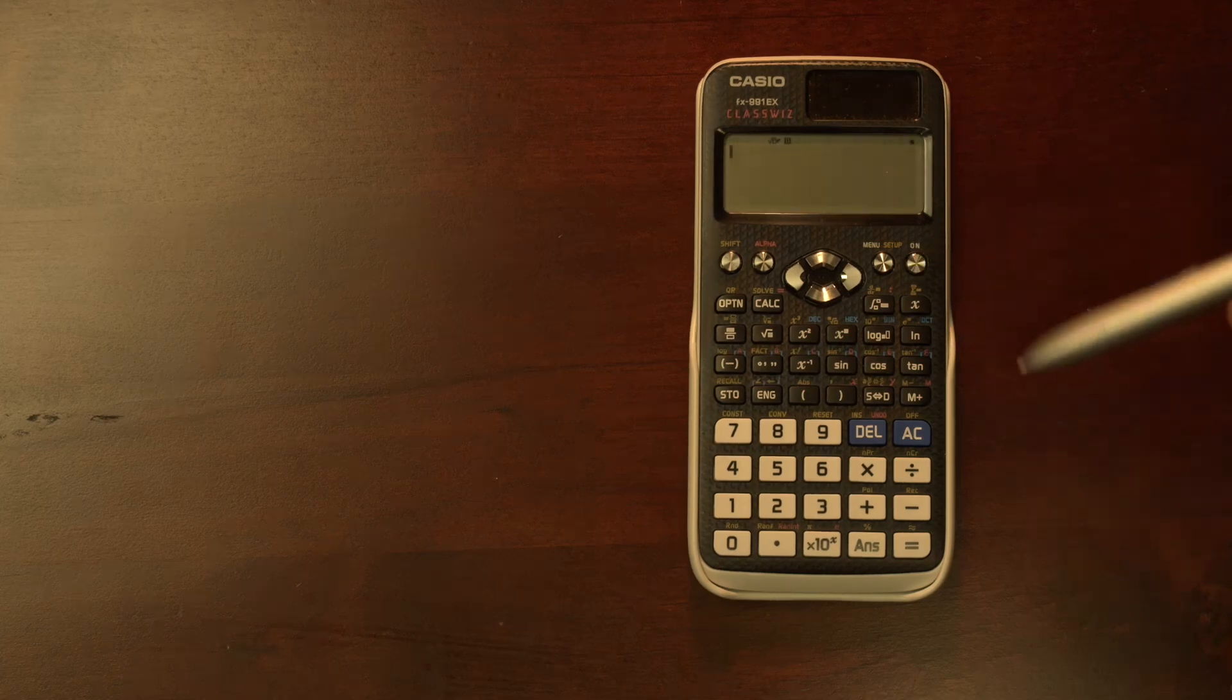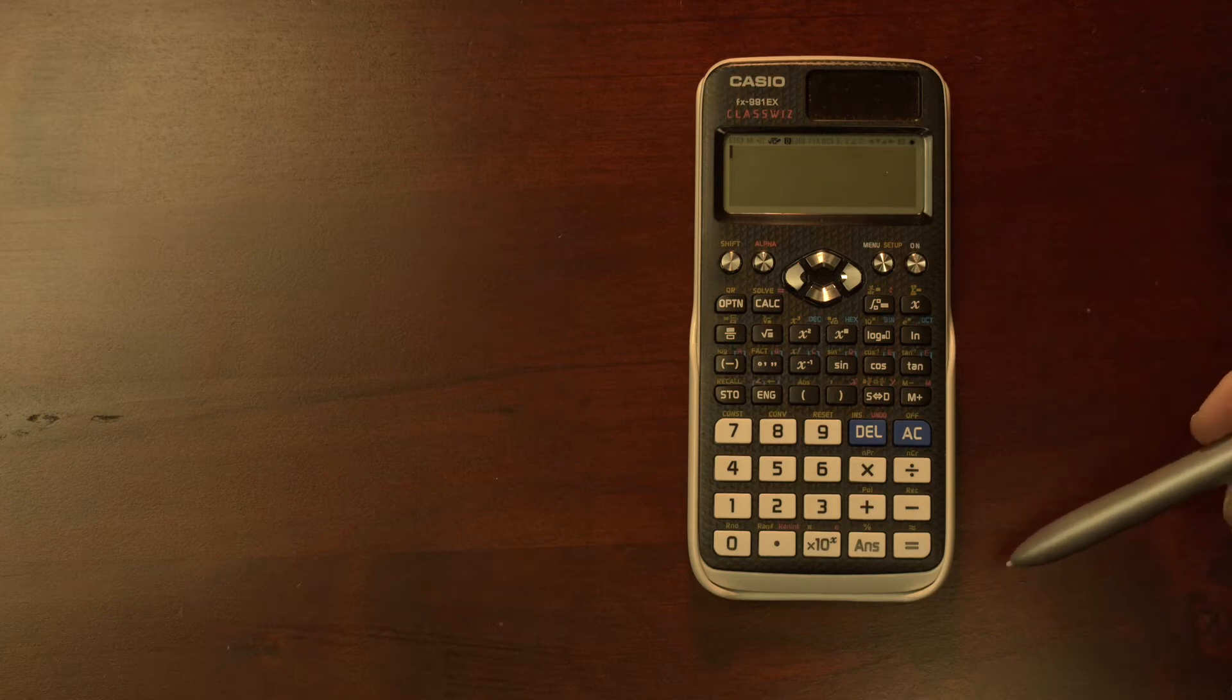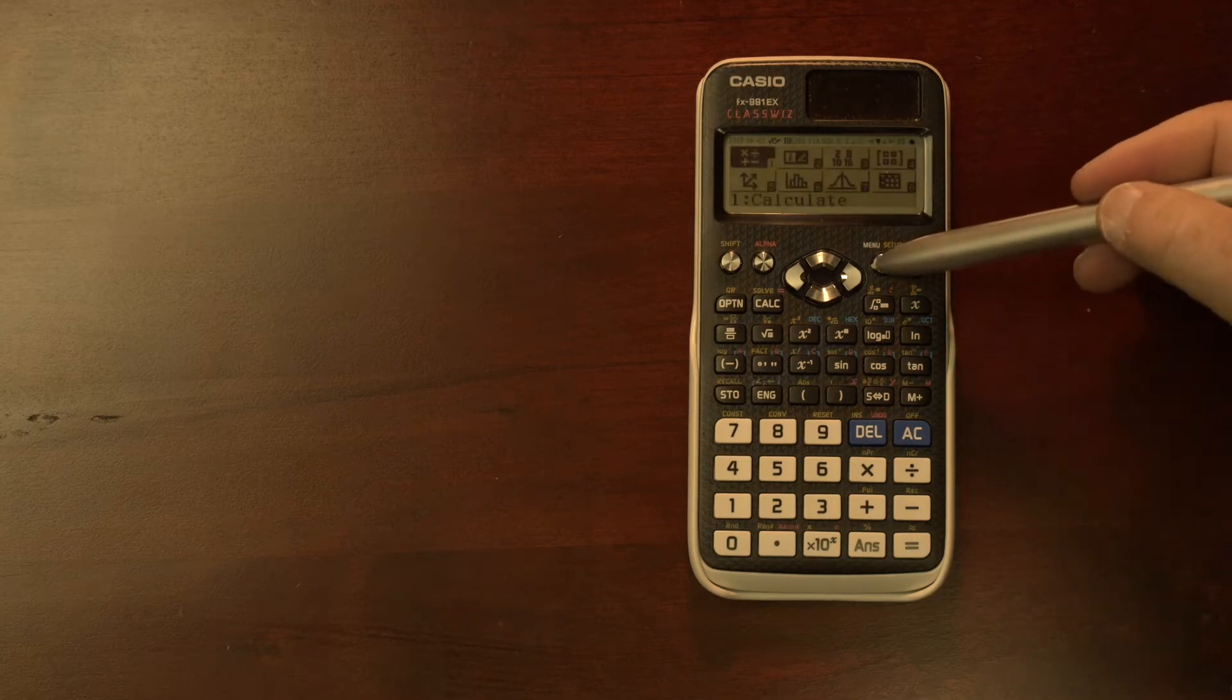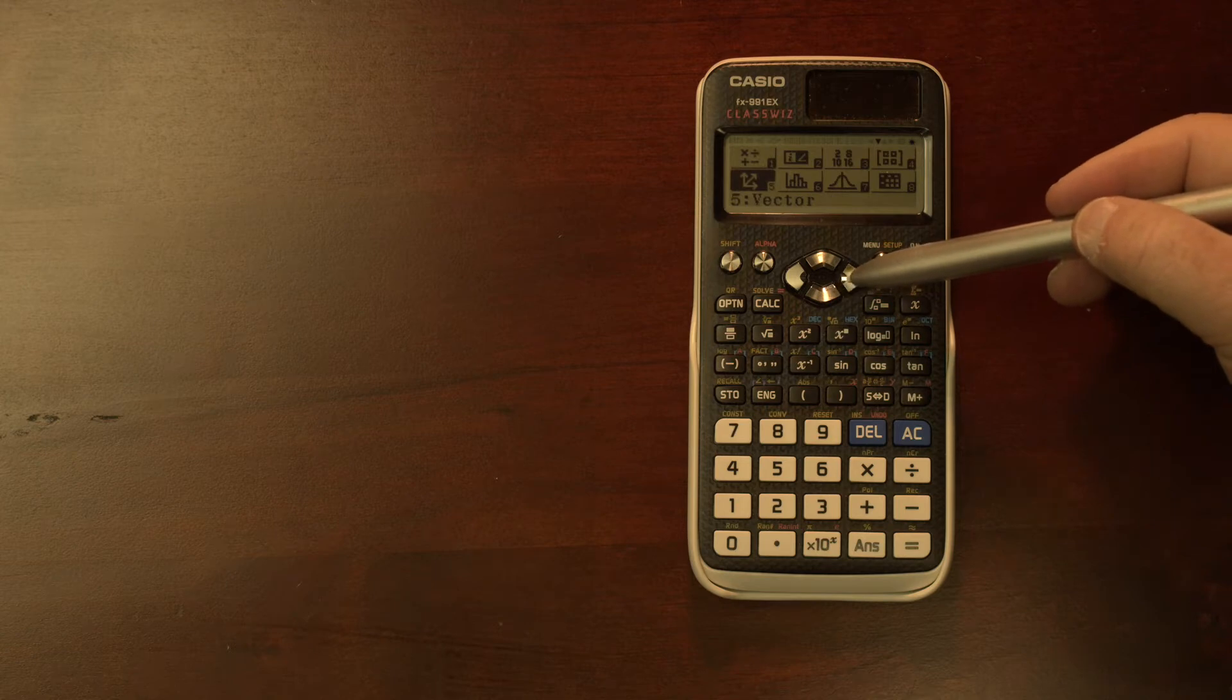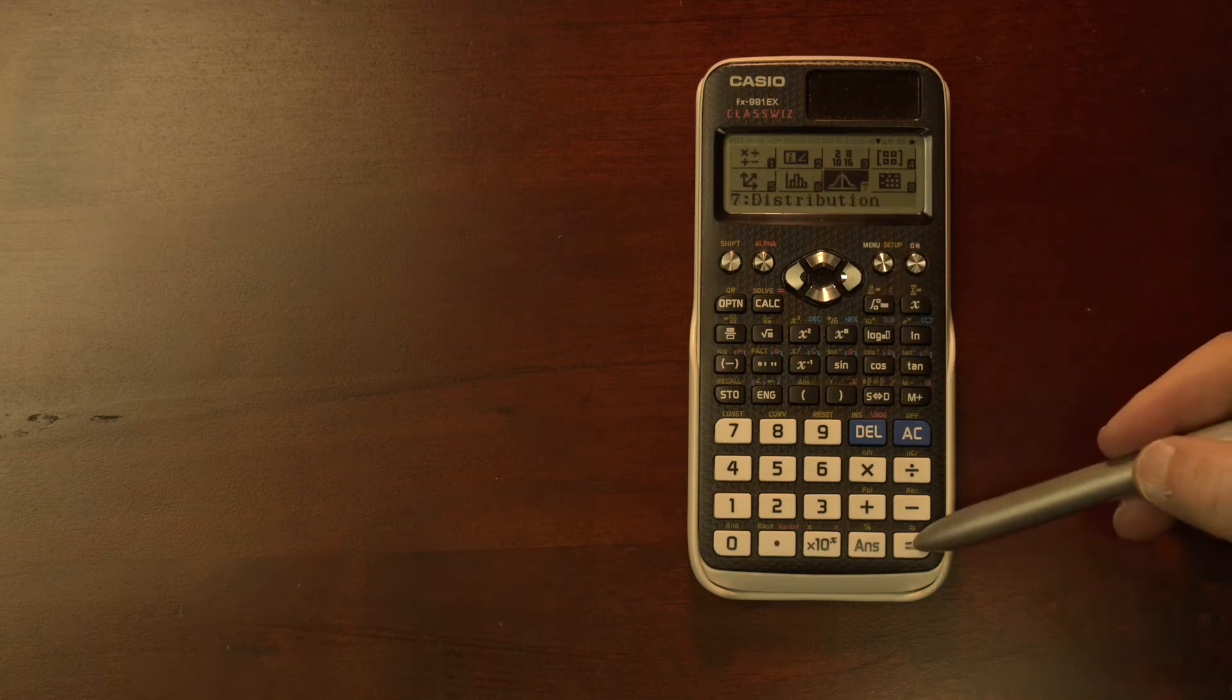First, of course, we turn on the calculator and then we're going to use the menu in order to select the distribution mode. So we toggle over to number 7 and that's our distribution and then hit equal.